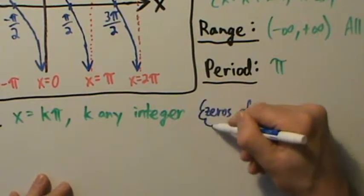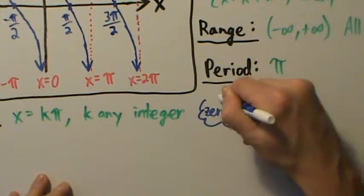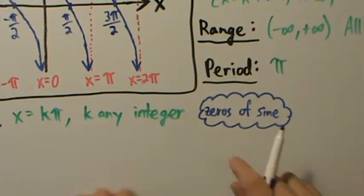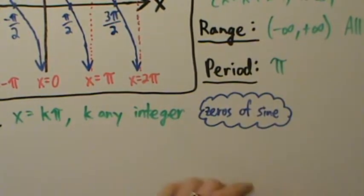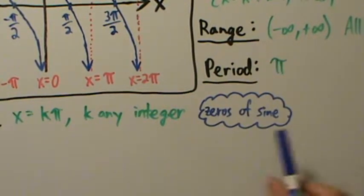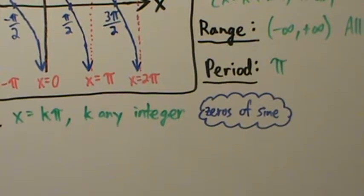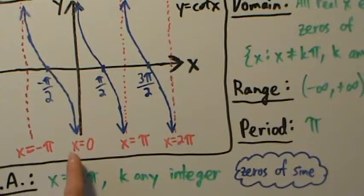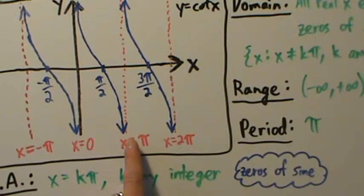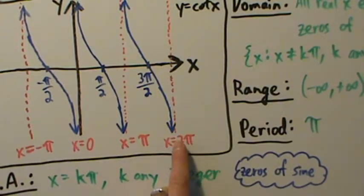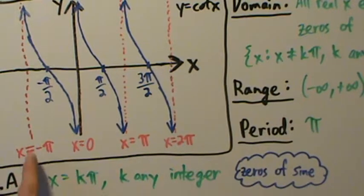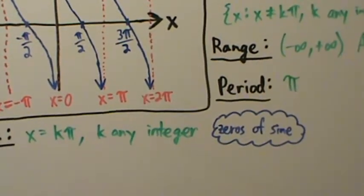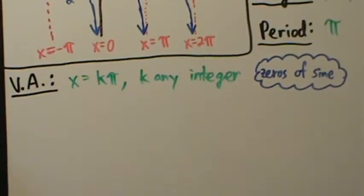A zero of a function — a pre-calculus or college algebra term — is just some number that makes that function equal to zero. Sine of 0 is 0, sine of pi is 0, sine of 2 pi is 0, sine of negative pi is 0. So 0, pi, negative pi, and 2 pi are all zeros of the sine function. That covers vertical asymptotes.